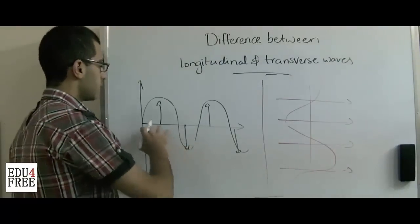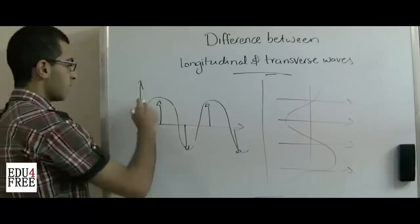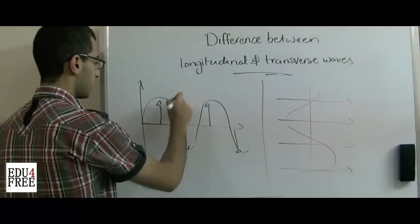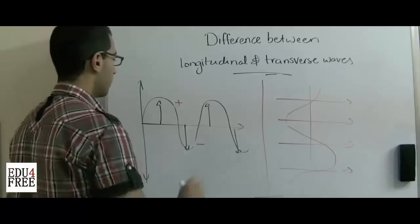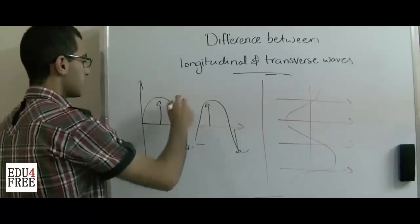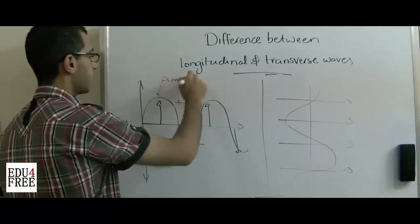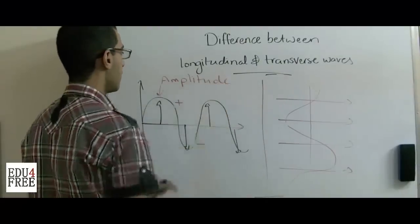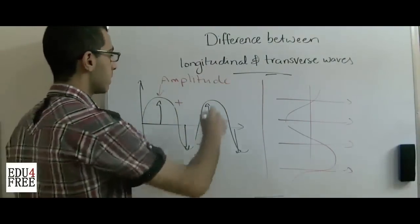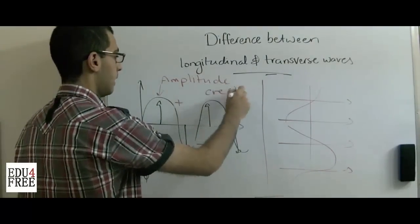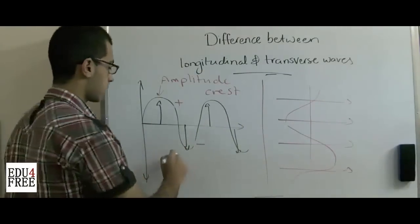We have to know that here, in the transverse waves, when the body moves up in the positive direction or down in the negative direction, this part which is called the amplitude — the amplitude made in the positive direction is called a crest, and the amplitude made in the negative direction is called a trough.